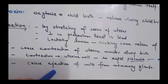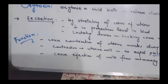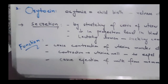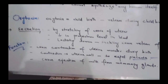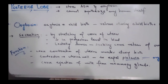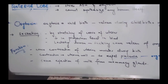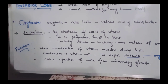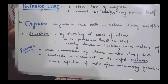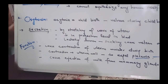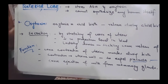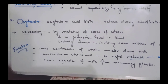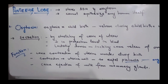Oxytocin also causes milk ejection from the mammary glands, which is also a main function. Oxytocin is secreted by the pituitary gland and stored in the posterior lobe.